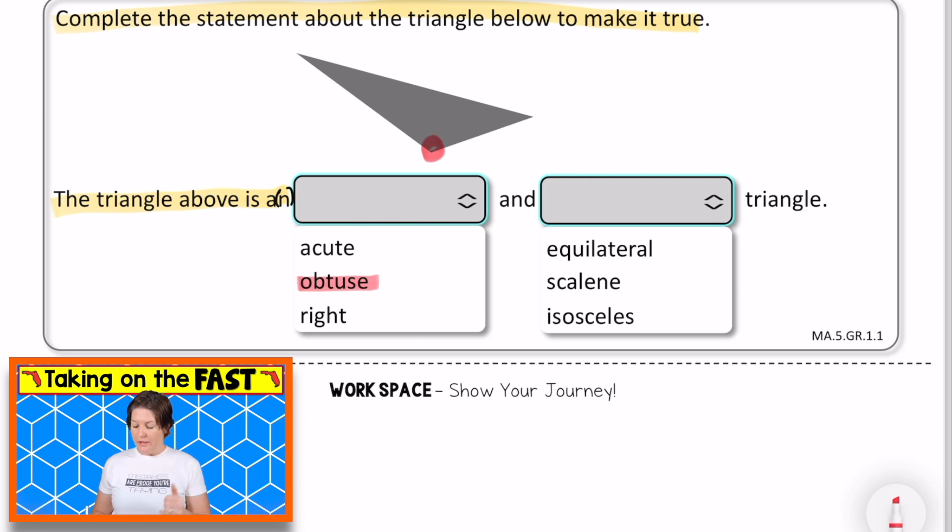And is it equilateral, scalene, or isosceles? And I took my paper and I measured each side, noticing that they were three different sides. So this would be scalene. It's obtuse and scalene. And these little buttons right here, you would just press those to drop down your menu and select your answer, just like I've done here. Pause the video to make any notes that you still need to make. And when you're ready, press play.